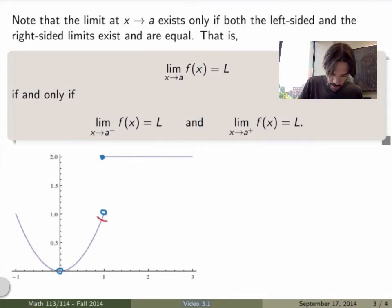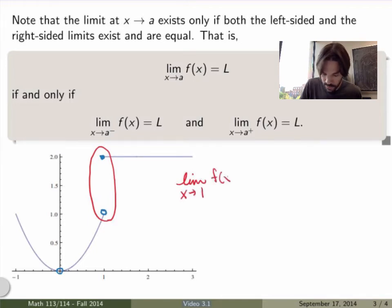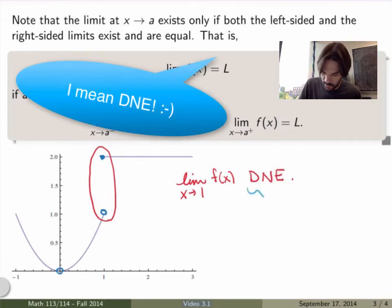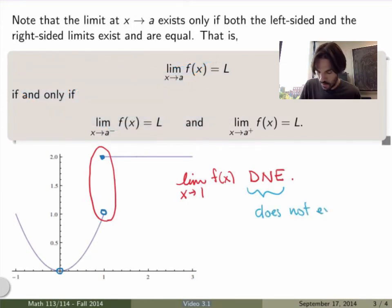So if I go back to my example here, well, the two limits, the left-sided limit and the right-sided limit had different values, so the limit, the full limit as x goes to 1 of f(x) does not exist. We usually write DNA to say that it does not exist, so what this stands for is does not exist.